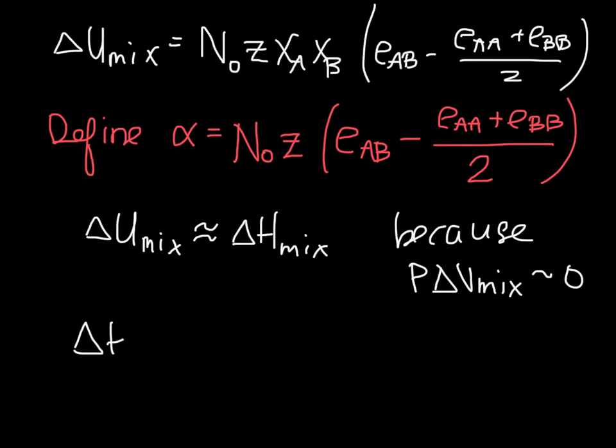If we compare our delta H mix equation, we end up with basically the same expression here as we have here. This is the expression for alpha. This is where alpha comes from physically. We can take a look now at the implications.